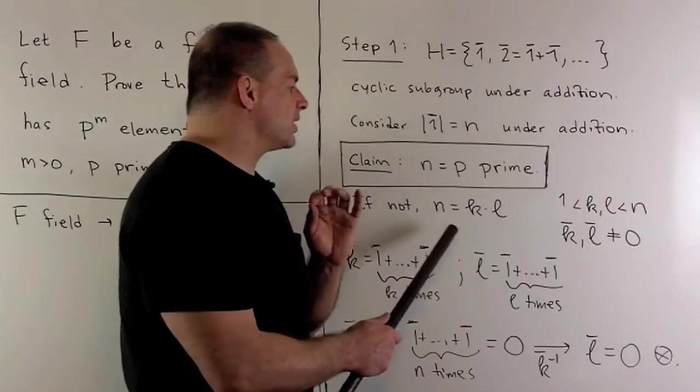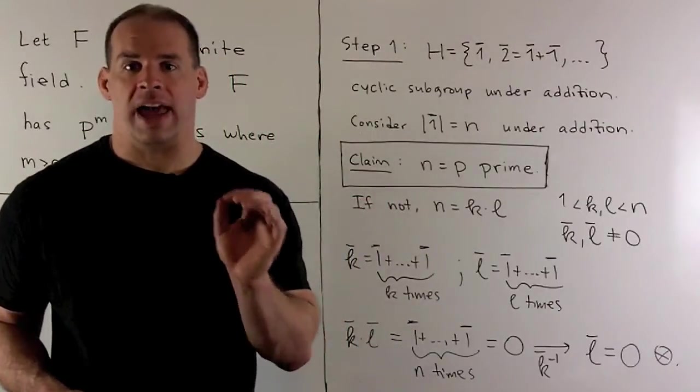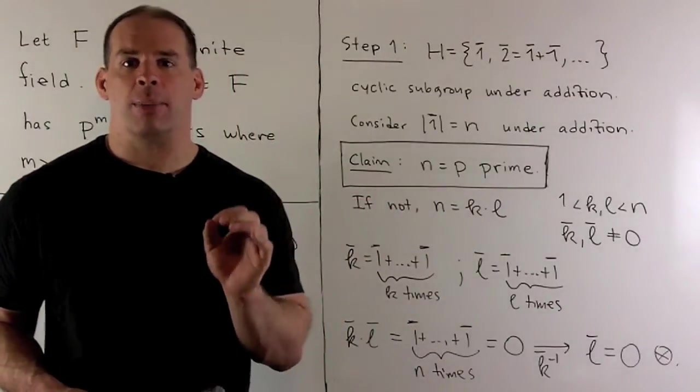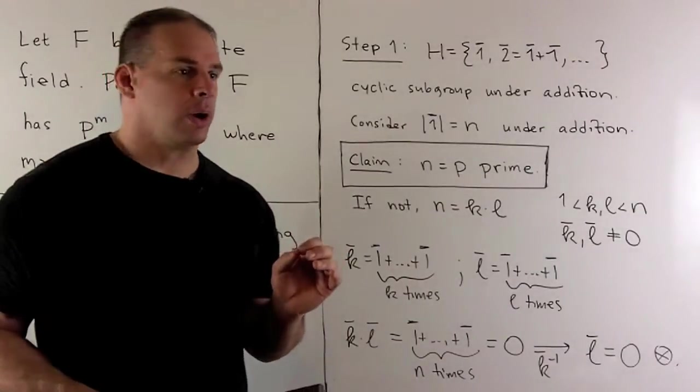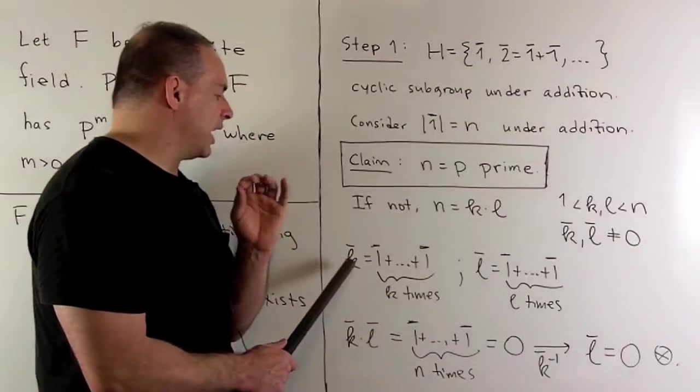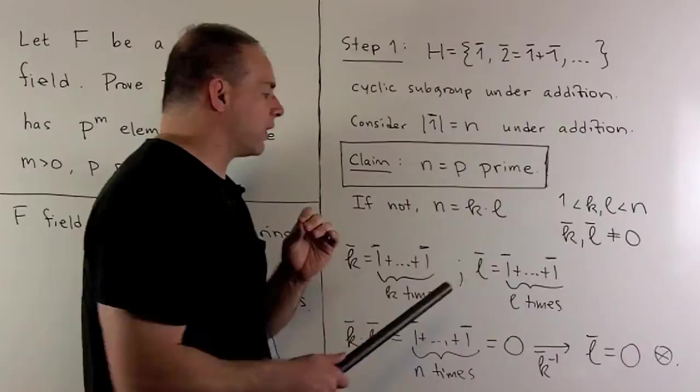So, suppose I write n as k times l. k and l are going to be between one and n. I'm going to assume that k bar and l bar, the images of k and l in our field, are both non-zero. Okay, so k bar is just taking one bar, adding it to itself k times, likewise for l bar.